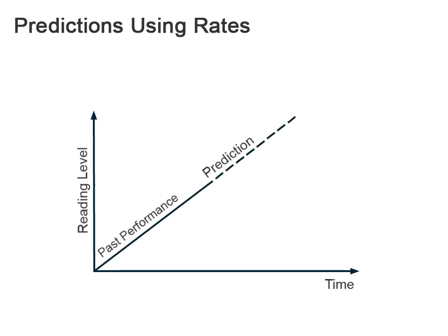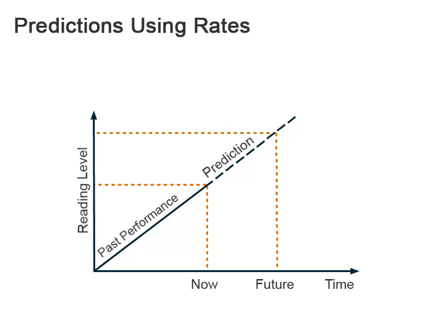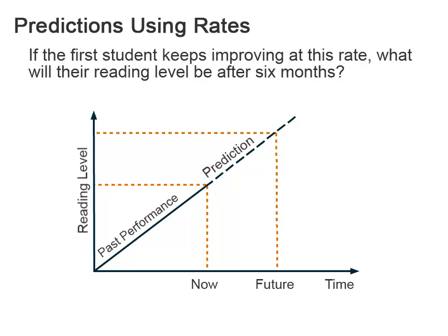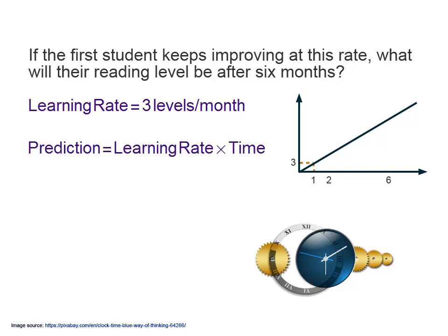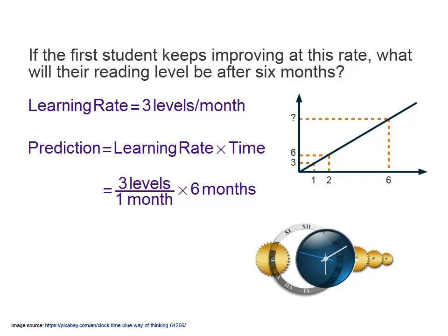Rates can also be used to make inferences or predictions. We can use them to predict how a student will continue to improve their reading. For example, if a student keeps improving at this rate, what will their reading level be after six months? From what we calculated, our student was moving through the levels at a rate of three levels per month. The predicted level is the learning rate multiplied by time. So it takes three levels per month times six months. This results in a prediction that the student will reach level 18 by the end of six months.